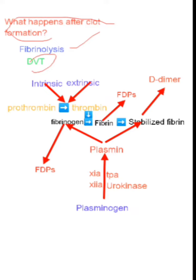We start with the intrinsic and extrinsic pathways, which lead to the conversion of prothrombin into thrombin. This process requires calcium ions. Both intrinsic and extrinsic pathways contribute to the formation of thrombin from prothrombin — we have covered that in our previous video, please check it out.